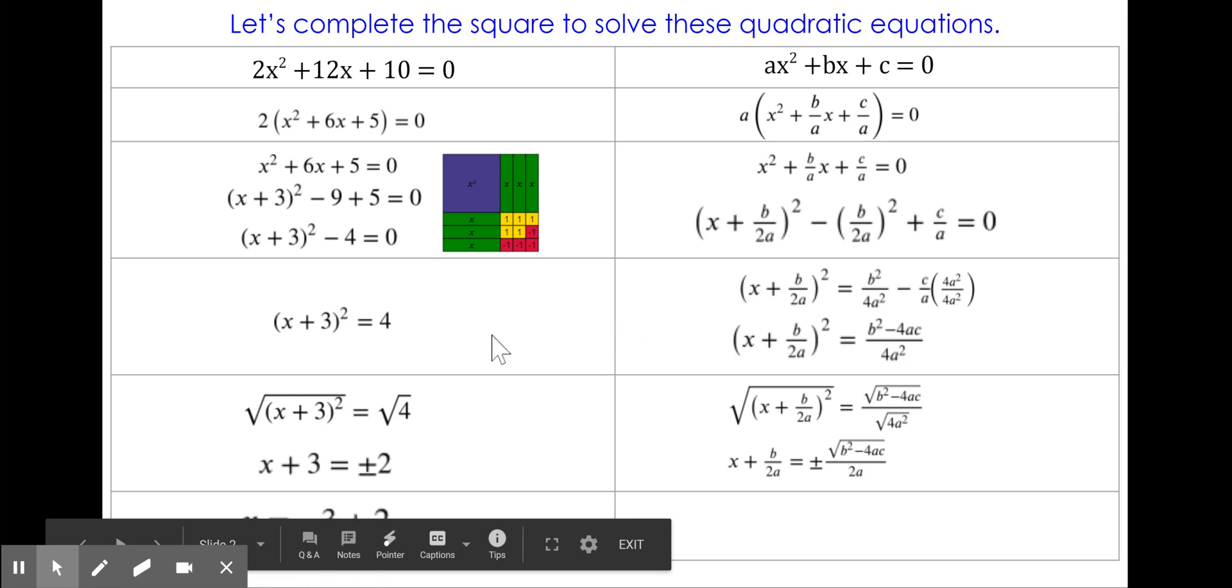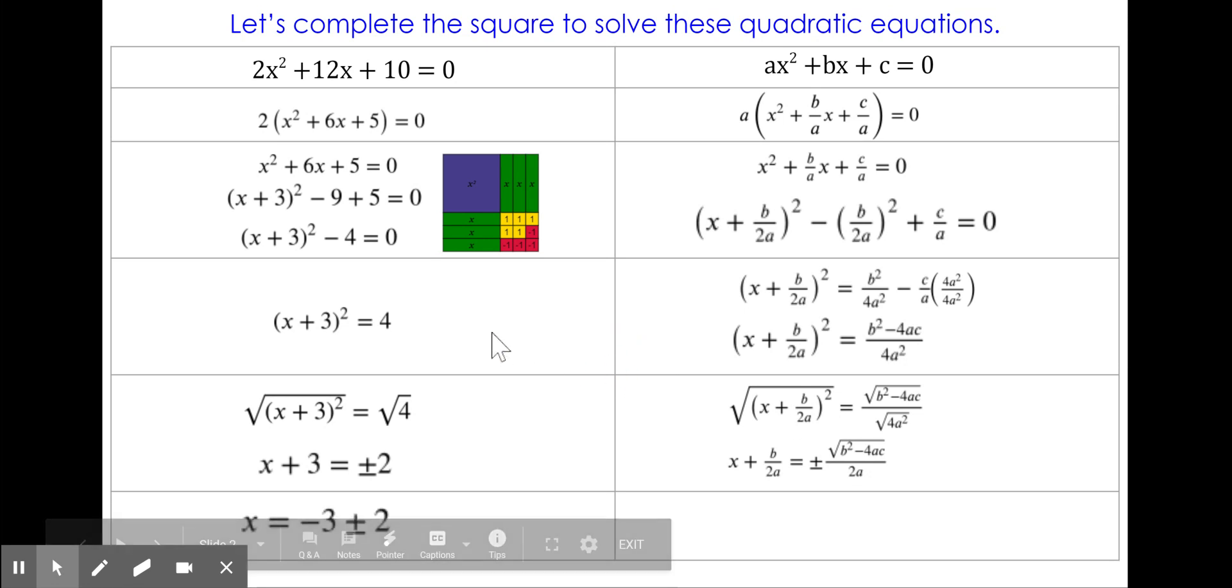Lastly, we write our solutions. On the left, we have x is equal to negative 3 plus or minus 2, because I used inverse operations to move the 3 to the other side. I could simplify this into two solutions, but that's not the point of the video. On the right, I moved the positive b over 2a to the other side by subtracting it, and you now see the quadratic formula.